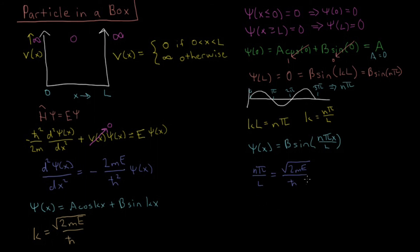Then after enough manipulation and rearrangement, you should be able to arrive at E equals n squared pi squared h-bar squared over 2M L squared.